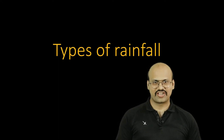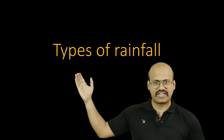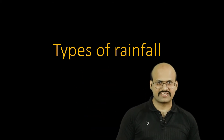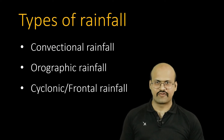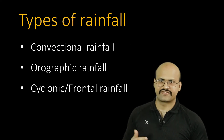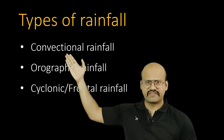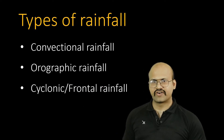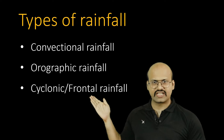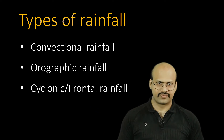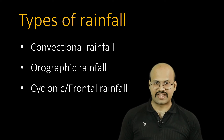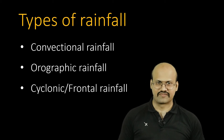Hello friends, welcome to another video of Zeta Axis. Today we will discuss different types of rainfalls. Based on the mechanism of rainfall, we can classify rainfall into three different types: the first is convectional rain, the second is orographic rainfall, and the third is cyclonic or frontal rainfall. We will see each of these rainfalls one by one and try to understand the exact mechanism.